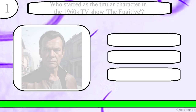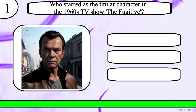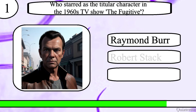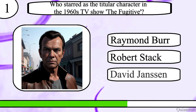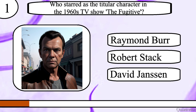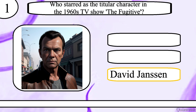Question 1. Who starred as the titular character in the 1960s TV show The Fugitive? Raymond Burr, Robert Stack or David Janssen? The correct answer is David Janssen.